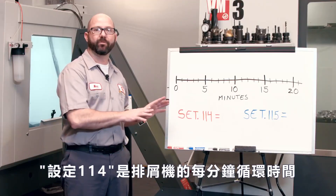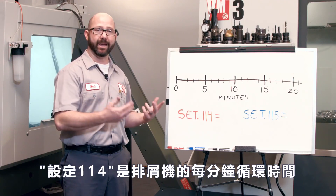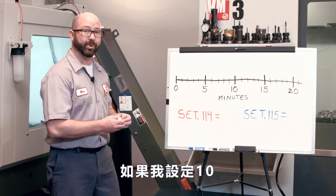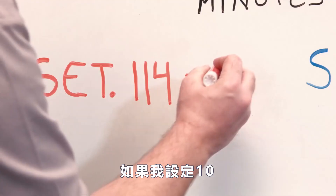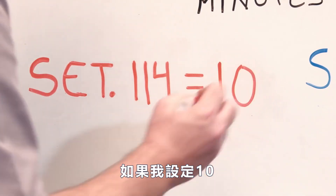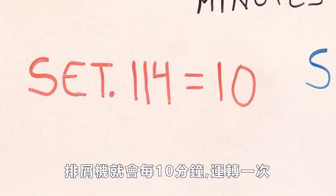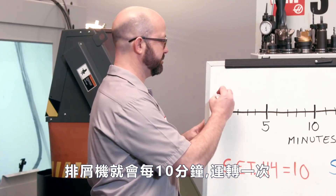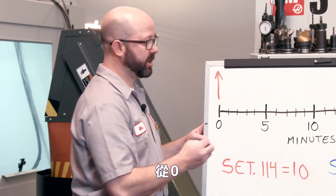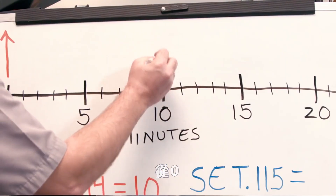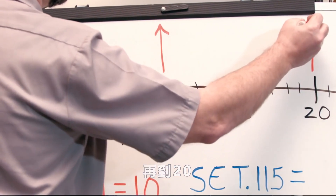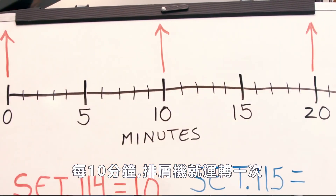Setting 114 is our conveyor cycle time in minutes. If I set this to 10, then our conveyor is going to kick on once every 10 minutes — at zero, at 10, at 20. Every 10 minutes, that conveyor is going to kick on.